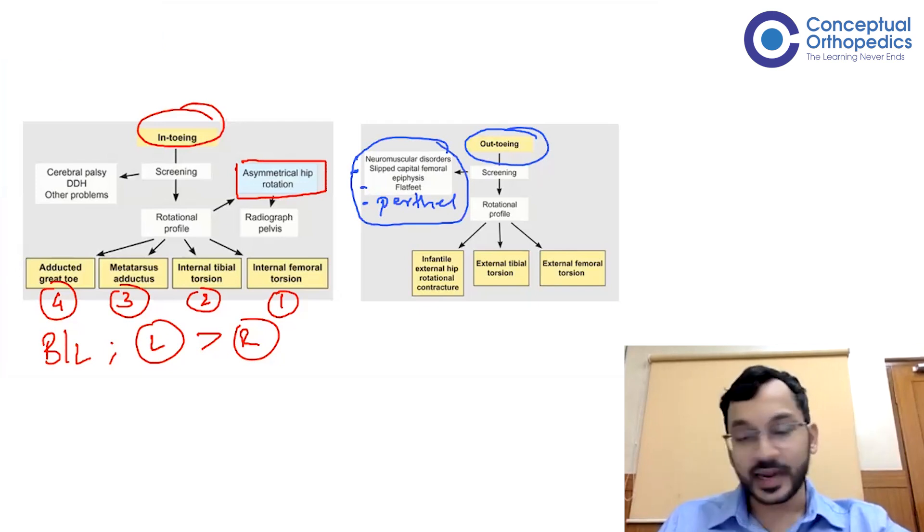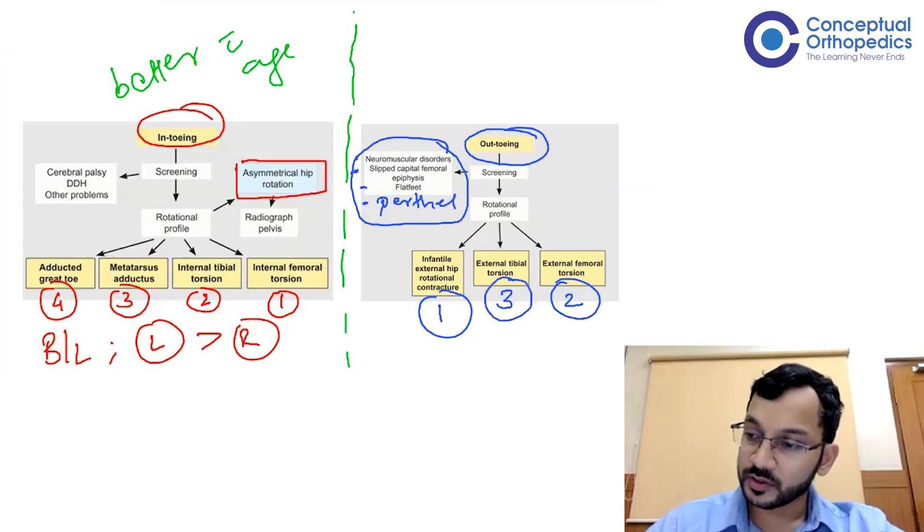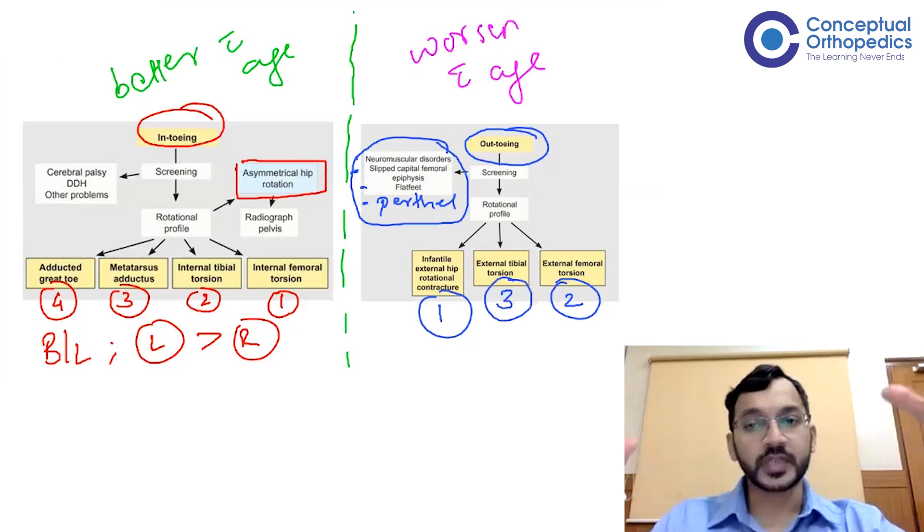Once that is done, we come to the rotational profile. In the rotational profile, we have three conditions. The first condition is the infantile external hip rotational contracture, so that means the hip unilaterally is externally rotated and there is a contracture present. The second condition is external femoral torsion or decreased femoral anteversion or femoral retroversion. And the third condition is external tibial torsion. All of these in-toeing conditions get better with age, whereas all the out-toeing conditions worsen with age.